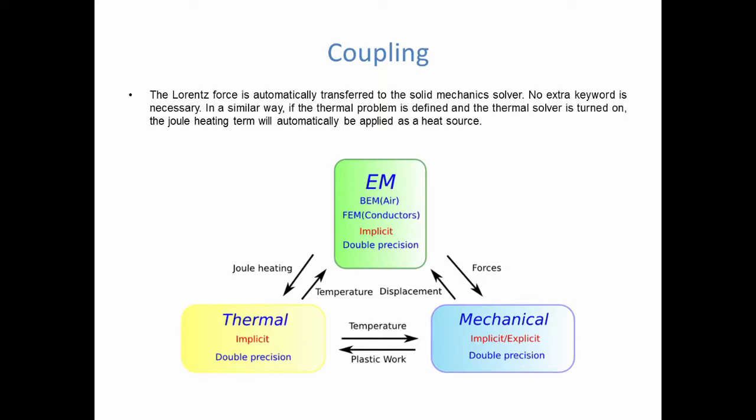The three solvers, Electromagnetics, Thermal and Solid Mechanics, they each run independently. So it means that they all have their own time step. And the coupling between them, or at least between EM and solid and thermal, happens automatically. In other words, the Lorentz force that we saw in the previous video and that is calculated by the EM solver, is automatically given to the solid mechanics solver. And also, if the user has defined the thermal problem, then same thing. The Joule heating term will automatically be transmitted as a source term. There is no keyword, there is nothing that the user needs to do. And in fact, in the previous cases that we saw, coupling was already happening automatically. The Lorentz forces were transmitted to the solid mechanics solver. But since, if you remember, we used rigid materials that were fully constrained, so those forces had no effect.